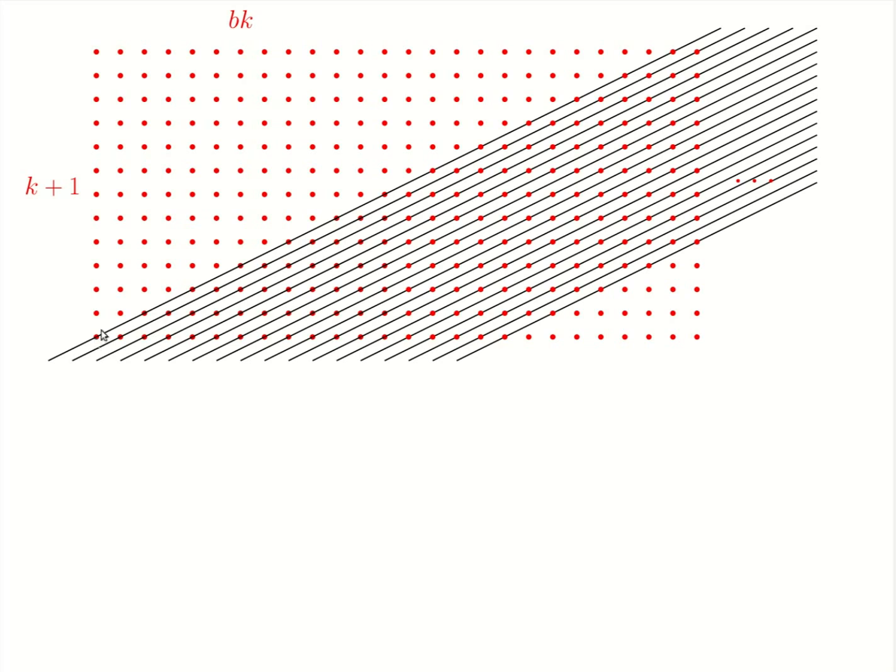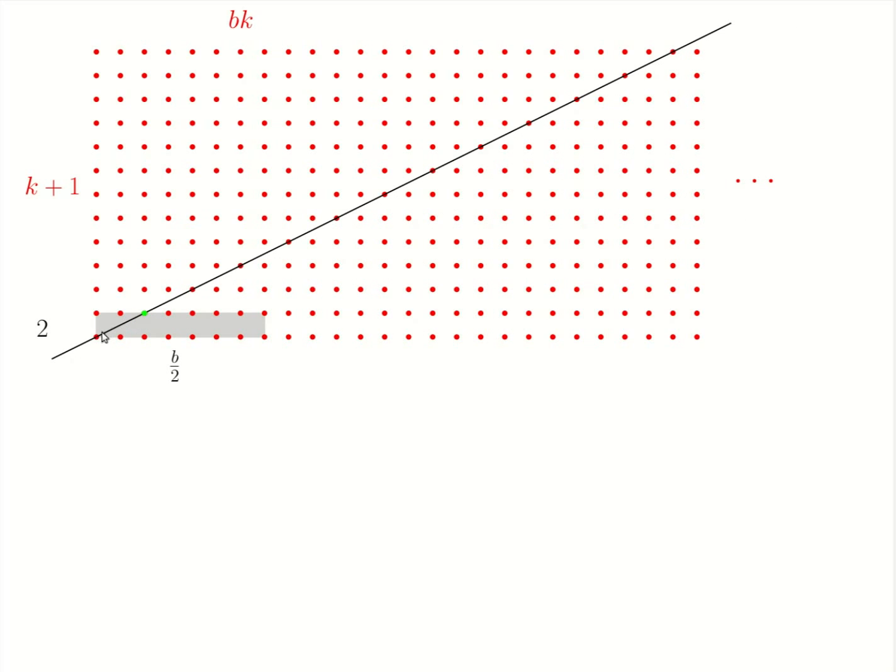As you can see, this family of lines has been created by connecting this origin to the green point. But how do we count the incidences in such an example?